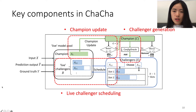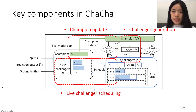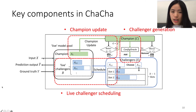As opposed to the offline learning setting where you have a fixed dataset to assess the quality of the configuration, in the online learning setting there is no clear stopping time of the evaluation. The AutoML algorithm needs to decide when to stop. That is where live Challenger scheduling plays a role.